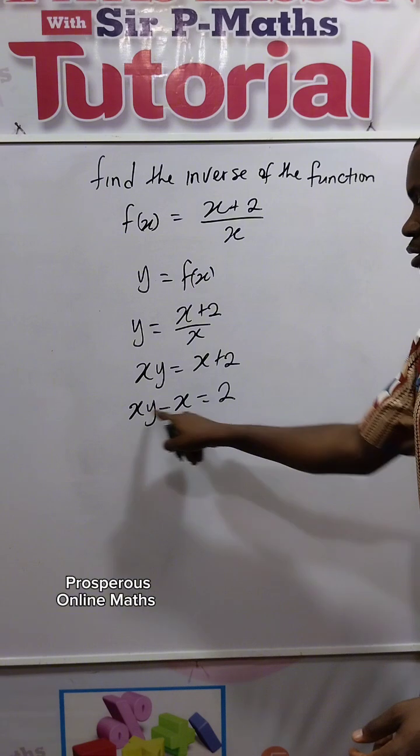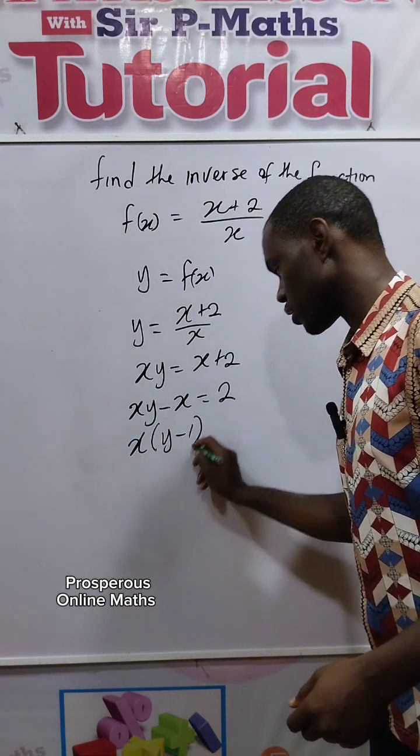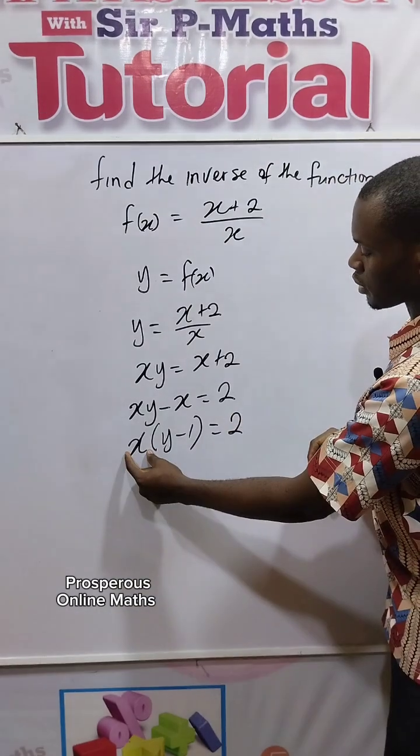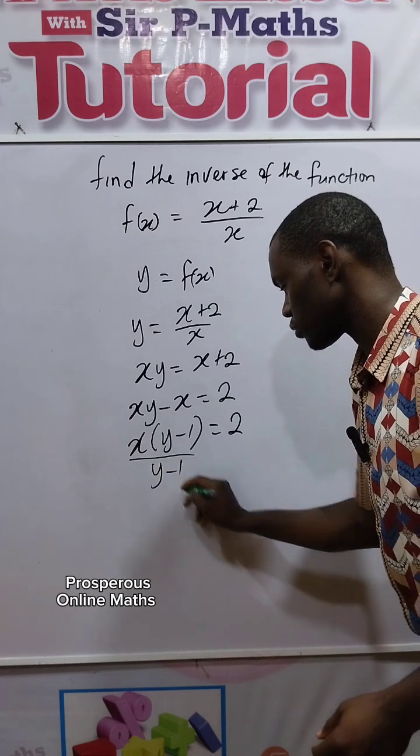Factorize here, x is common. So you have x times y minus 1 equals 2. So since we are looking for x, we want to make x subject. Divide both sides by y minus 1.